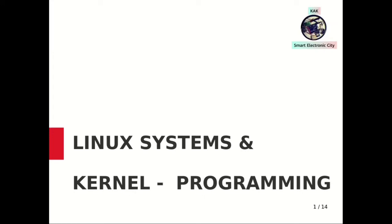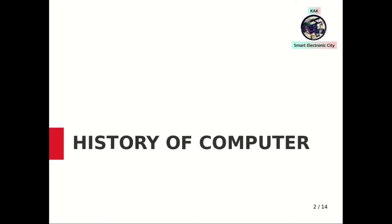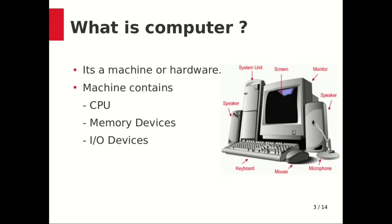We are going to discuss GNU/Linux systems and kernel programming, but before going to GNU/Linux systems we need to know a little about the history of computers. A computer is a machine or hardware that contains a CPU, memory devices, and input/output devices. The CPU and memory devices are inside the system unit, while the remaining components like speaker, keyboard, mouse, microphone, monitor, and screen are input/output devices.